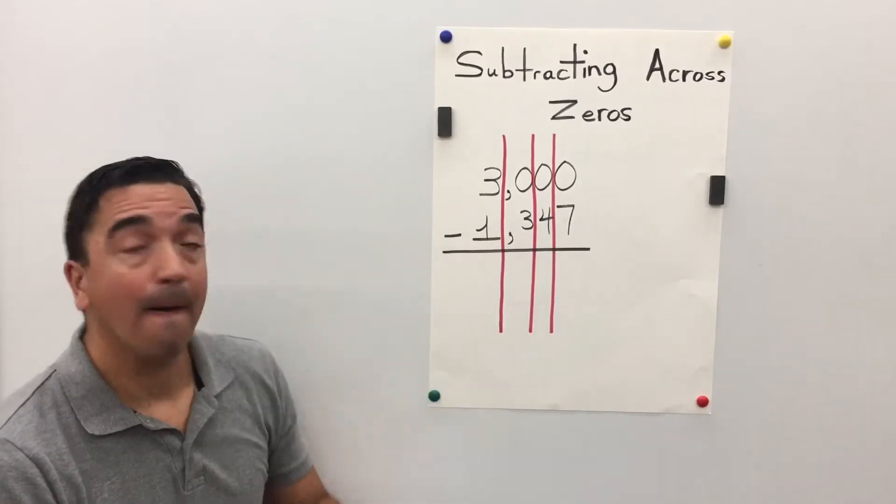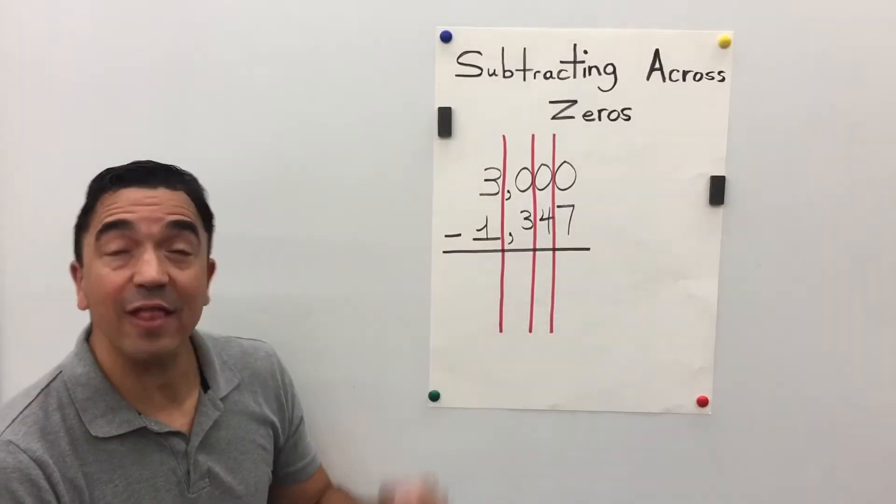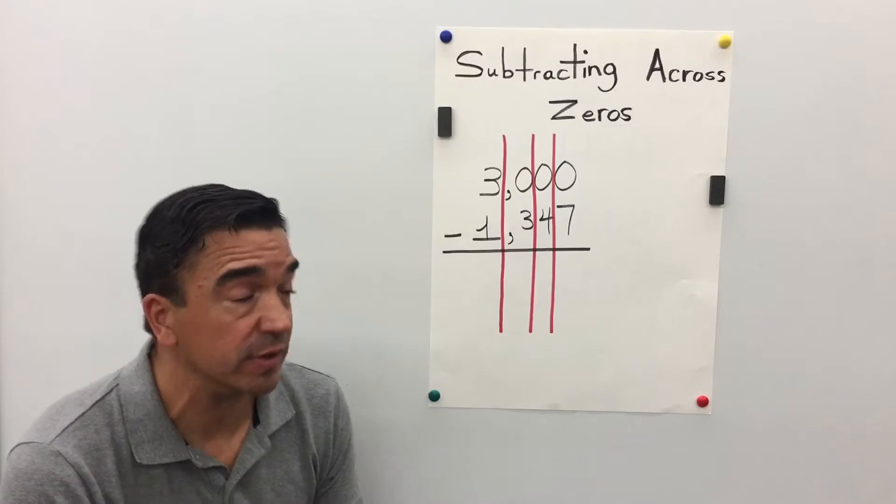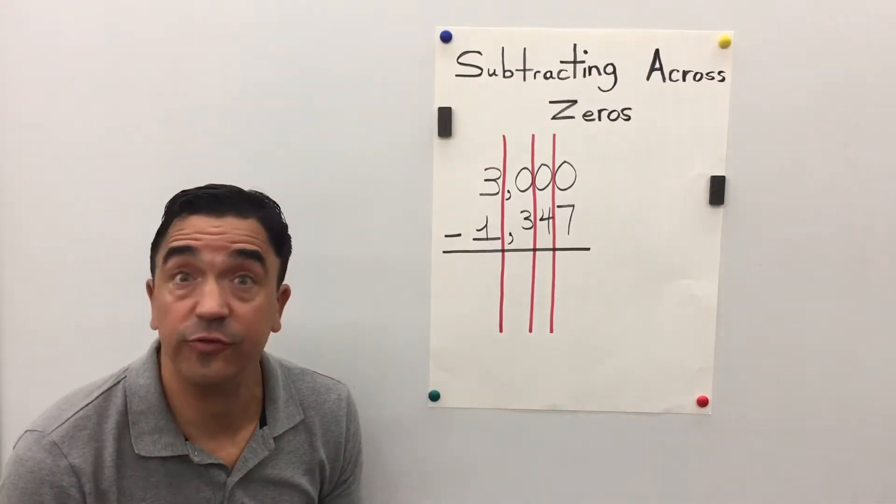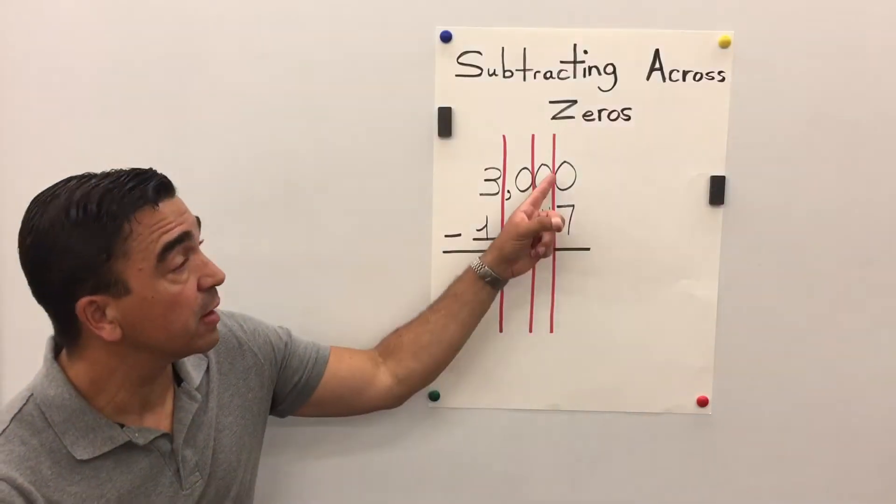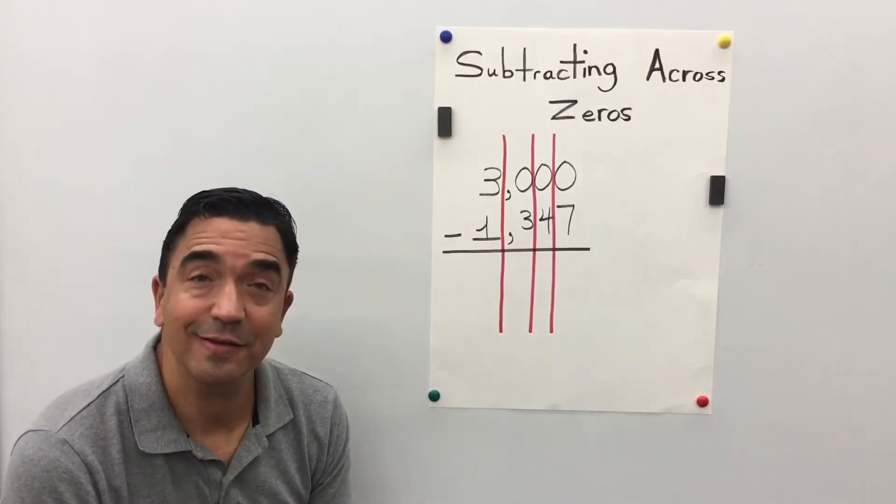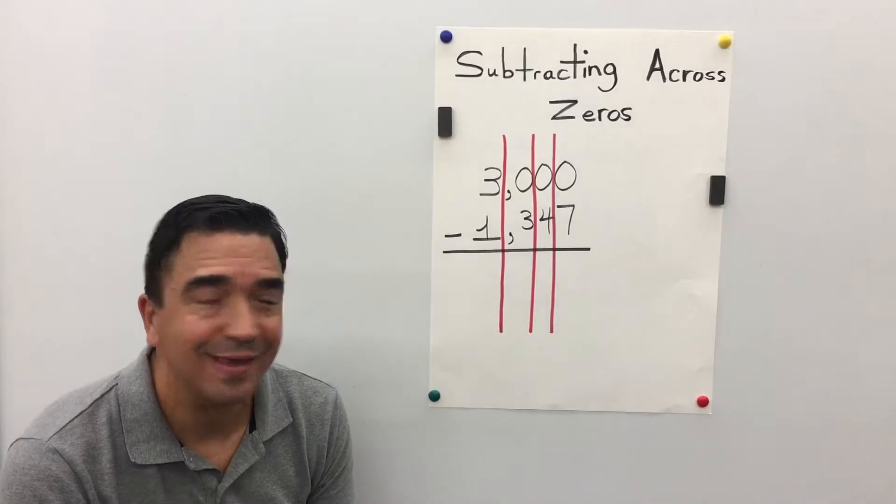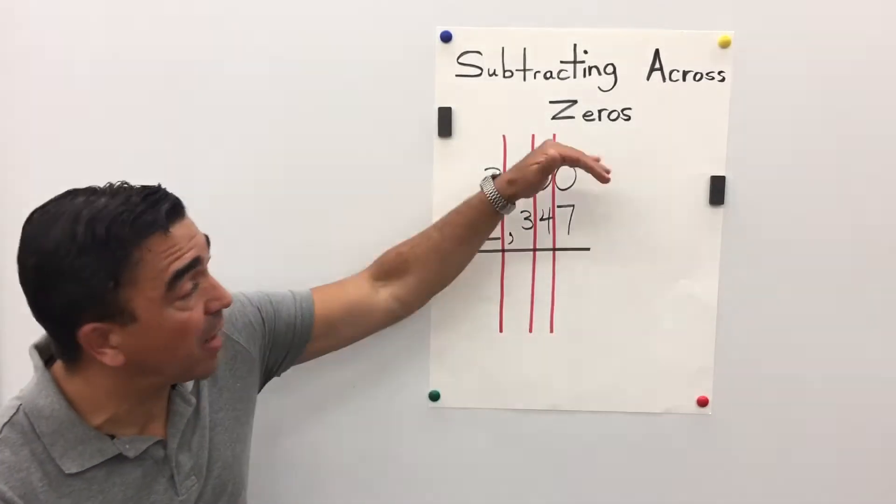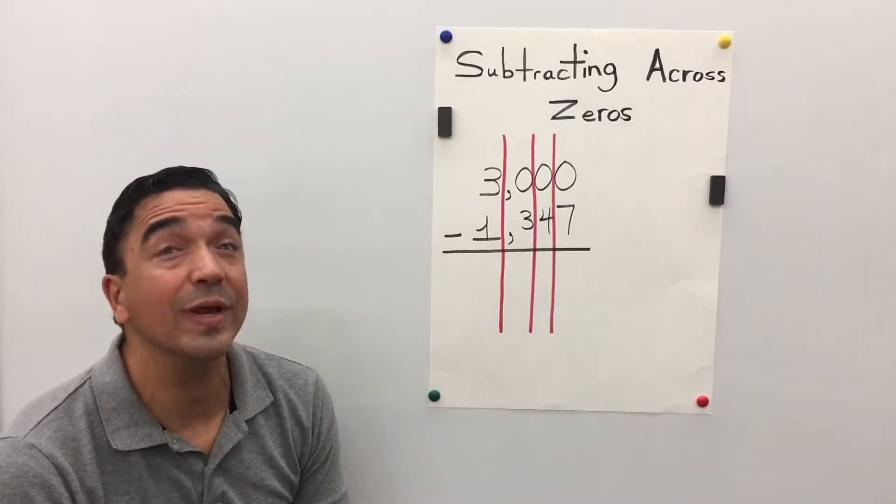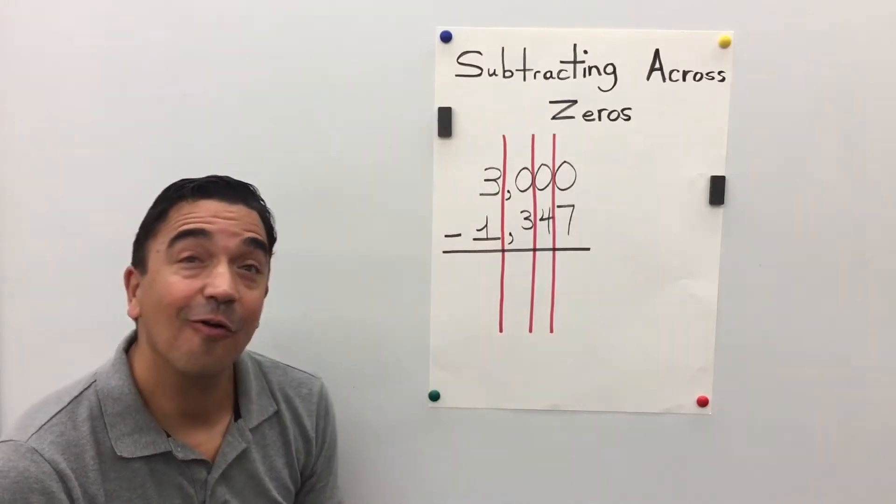3000 minus 1347. Let's start in the ones place. Zero minus seven. Can't do it. The bigger number needs to be on the top. Therefore, we need to borrow from the tens place.